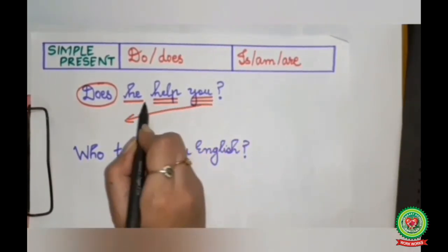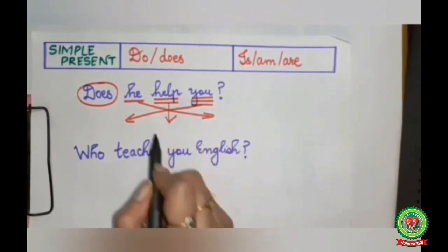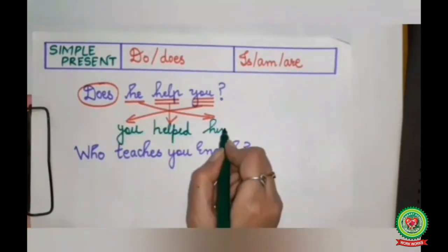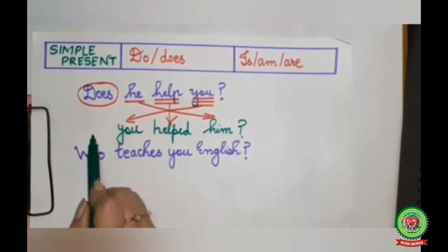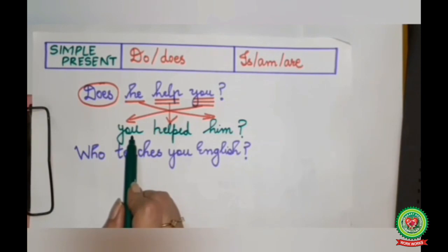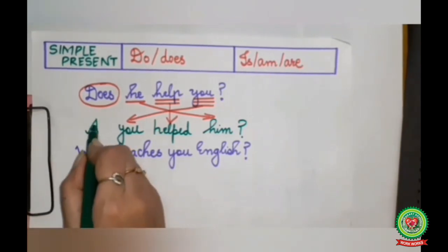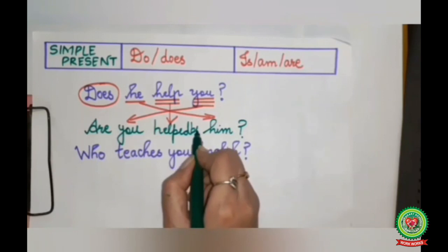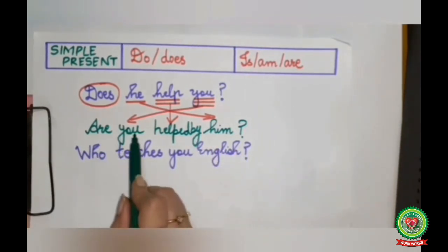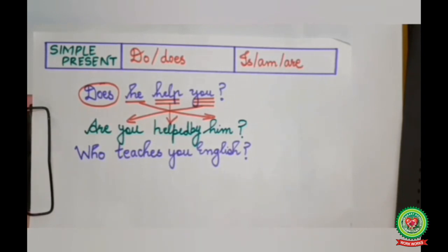Now 'you' will come in the beginning, 'he' will go to the last, and 'help' will change into its V3 form. Then a question mark will come. We have to add a helping verb according to our subject. Since 'you' has now become the subject, we will use 'are'. And before 'him' we add the word 'by'. So our sentence becomes: 'Are you helped by him?' Similarly, now we will do the second sentence.